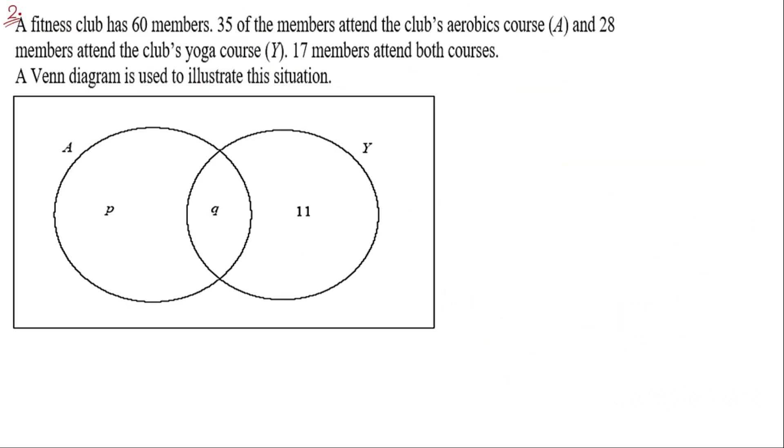Moving on to the second question. A fitness club has 60 members. 35 of the members attend the club's aerobic course A. 28 members attend the club's yoga course Y. 17 members attend both the courses. Now we have to start from the 17 members who attend both the courses. As we know they form the intersection, the region here. So Q here is going to be 17.